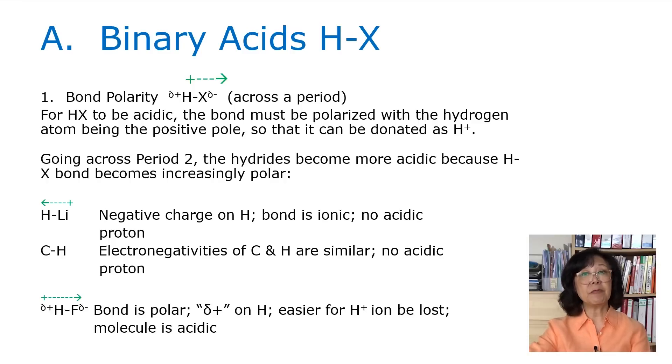Finally, when we end up with hydrogen fluoride, we can definitely see that the bond is polar, the delta positive is on the H and the delta negative on the F. It means it's easier for the hydrogen ion to be lost and then the molecule is acidic. Remember when we compare across the period, we are looking at bond polarity.